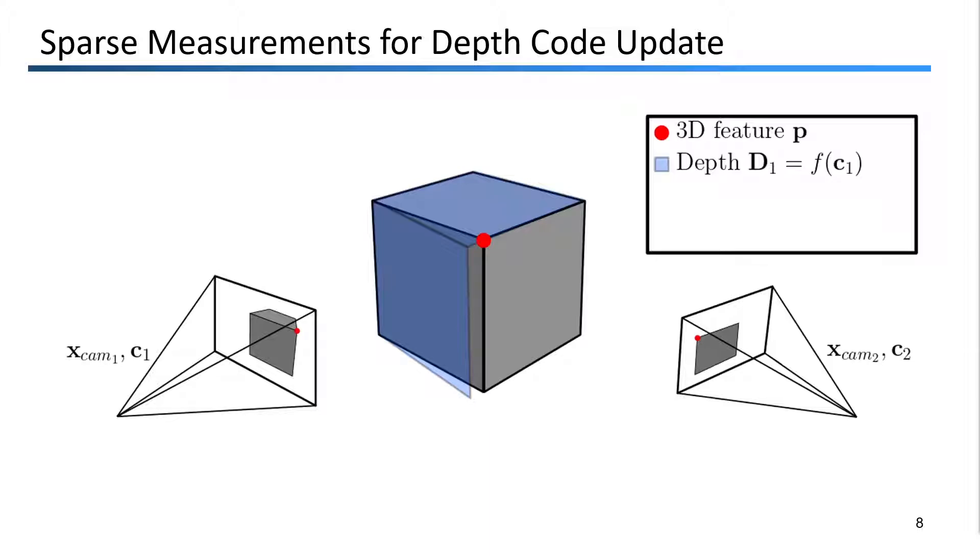As before, we have a 3D feature P being observed over multiple frames and a dense depth map, which we are calling D1 here. Remember now that the depth map is a function of this low-dimensional code C1. The goal here is to update the code by relating the depth map D1 to the 3D feature P. To do this, we compare P geometrically to the depth at the corresponding image coordinate, which involves projecting P into the camera frame and comparing the depths.